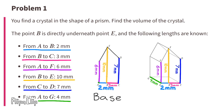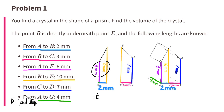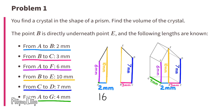Think of this side as the base of the prism — now think of this side as two separate trapezoids. 6 plus 10 is 16, divided by 2 is 8. In other words, the average length of these two sides is 8 millimeters. So we can treat this like a rectangle that's 8 millimeters by 2 millimeters. 8 times 2 is 16, so the area of this shape is 16 millimeters squared.